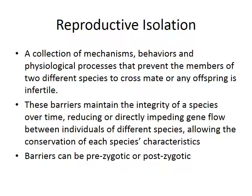There are also mechanisms creating reproductive isolation — a collection of mechanisms, behaviors, and physiological processes that prevent members of two different species from cross-mating, or that result in infertile offspring. There is a deliberate attempt to keep species separate. These barriers maintain the integrity of a species over time, reducing gene flow between individuals of different species and allowing the conservation of each species's characteristics — so you don't want, for instance, a butterfly mating with a donkey.